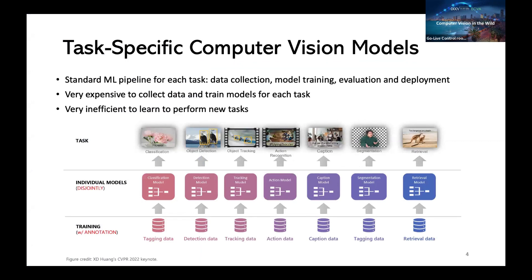Task-specific CV models are developed by following the standard machine learning pipeline. That is, for each task, we collect training data and evaluation data, then train and evaluate task-specific models on these datasets, and deploy these models in real-world applications. Because each task is so specific, the training data and model architecture for one task typically cannot be used for another. For example, image classification uses images with labels, while object detection requires a bounding box for each object, and a new architecture such as a fast region-based convolutional neural network. As a result, there are many silos developed in the CV community. Although state-of-the-art task-specific models often outperform humans on individual CV tasks such as ImageNet classification, they are far less efficient than humans at learning to perform new tasks.